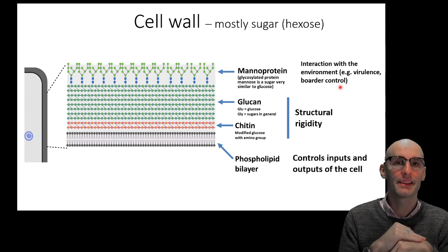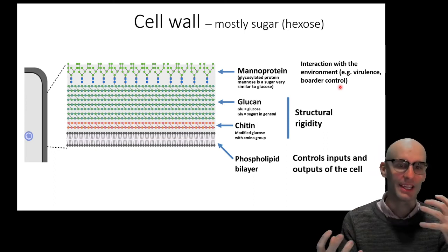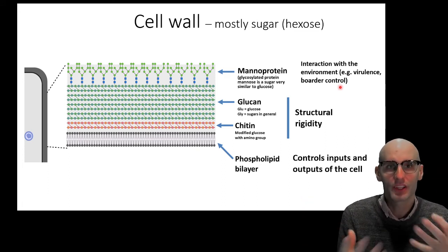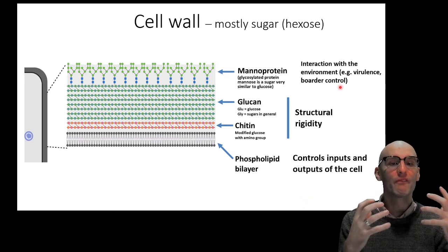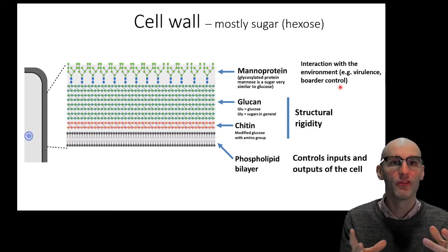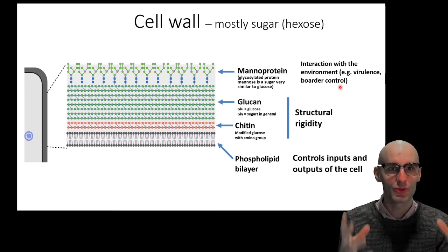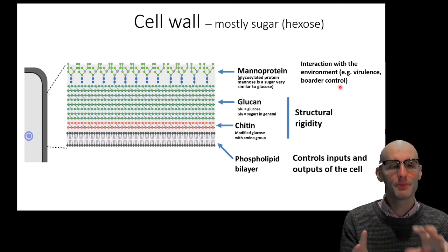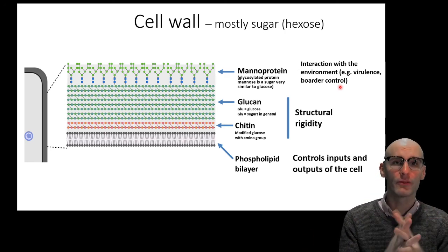Now, the manoproteins allow the yeast and the fungus to interact with the outside world. That's why it's the outer layer. And critically for us, when we're talking about disease, that's where virulence factors are going to be in there. So remember, virulence factors are factors that improve the infectious nature of the pathogen. And so these manoproteins are critical for that.